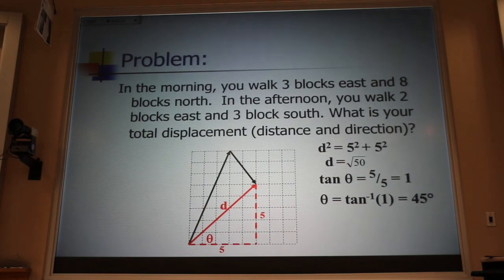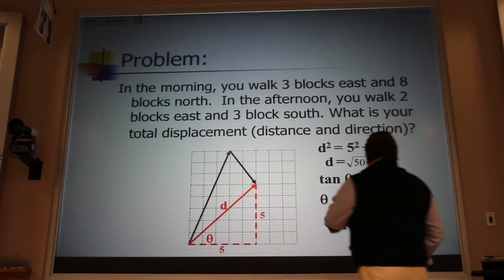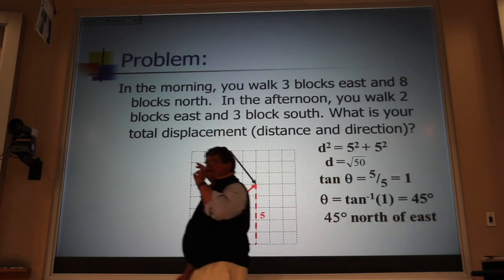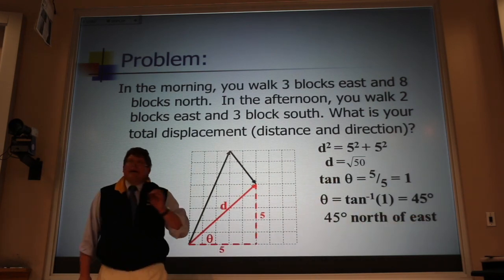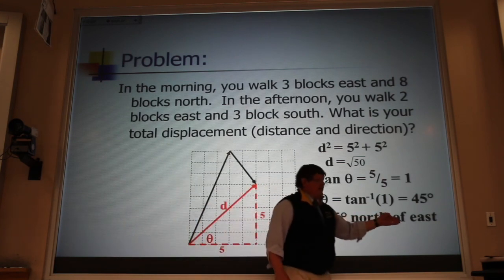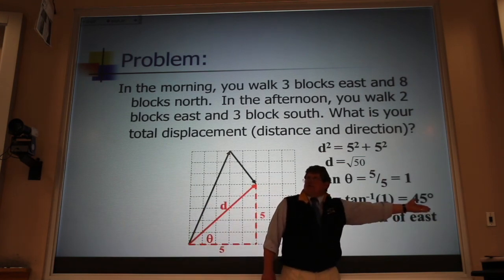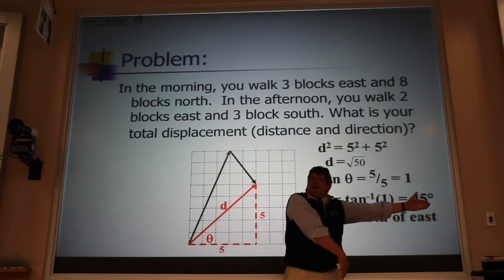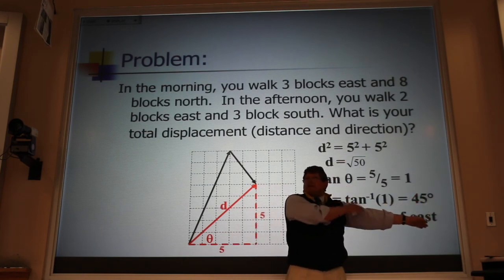And in this case, I would describe that as 45 degrees north of east. The most important word there is of. That tells you what your reference is. East is my reference direction. From east, I can either go north or I can go south. This tells me I should go north of east.